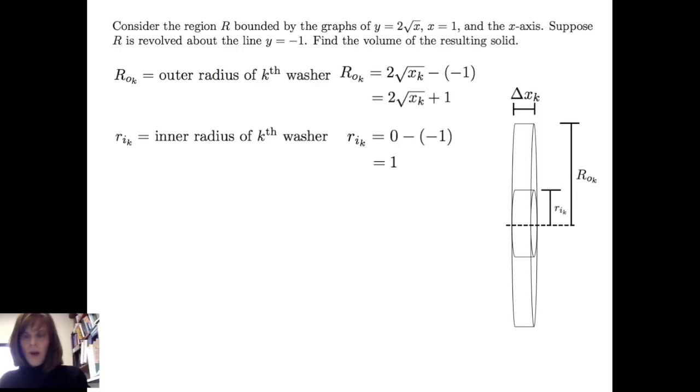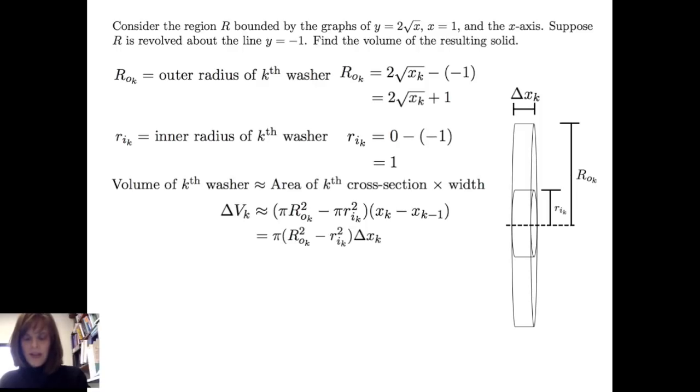Therefore, the area of the cross-section times the width gives us the volume of the k-th washer. So I get delta v sub k equals pi times the square of the outer radius minus the square of the inner radius times delta x sub k. When I deposit those pieces in there and simplify, I get the volume of the k-th slice is approximately pi times 4x sub k plus 4 times the square root of x sub k times delta x sub k.